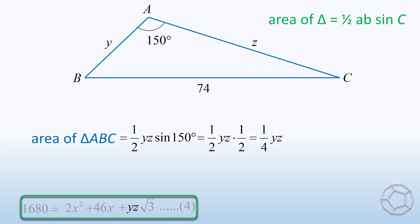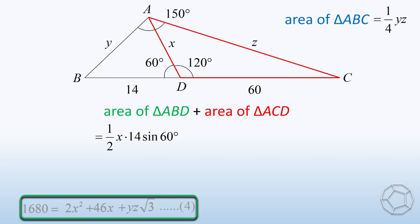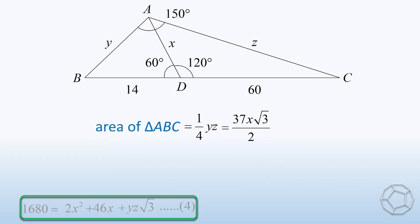Actually, we can do it in another way. You see, the area of the larger triangle is the sum of areas of two smaller triangles. For the green one, it is equal to 1 over 2 times X times 14 sine 60 degrees. For the red one, it is equal to 1 over 2 times X times 60 sine 120 degrees. It is so nice that both sine 60 degrees and sine 120 degrees are equal to square root 3 over 2. So, this expression can be simplified in terms of X only. Therefore, the area is equal to 37X times square root 3 over 2. Now, we can put an equal sign between these two expressions. Multiplying 4 on both sides, we get Y times Z is equal to 74X times square root 3. Let's call this equation 5.